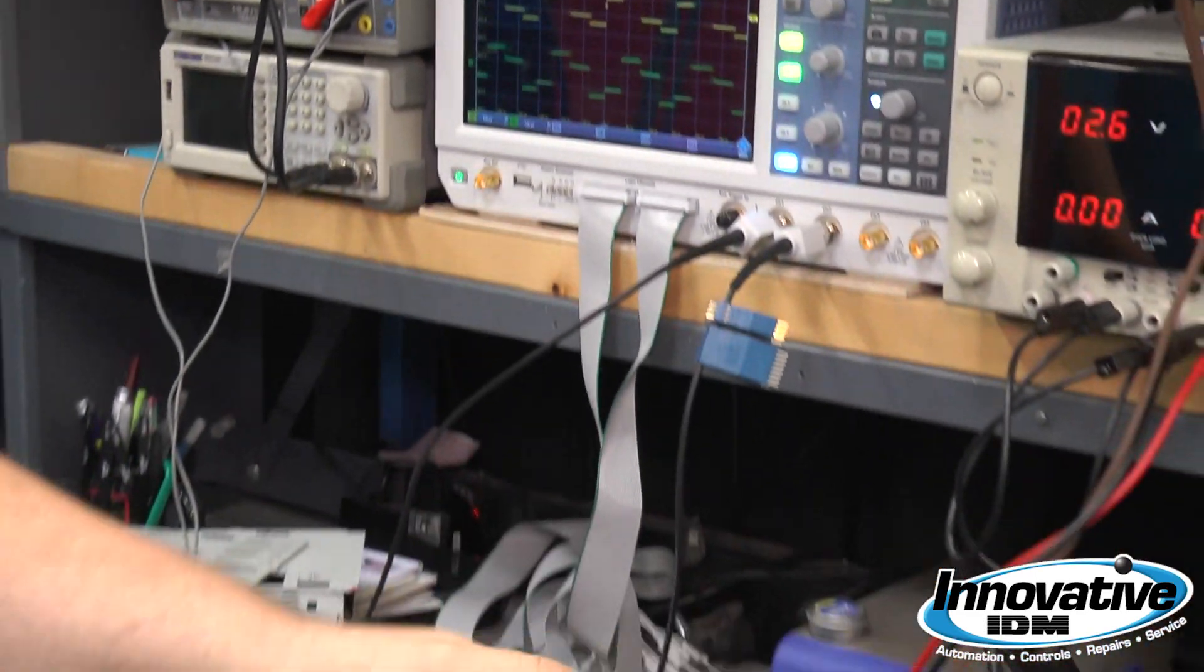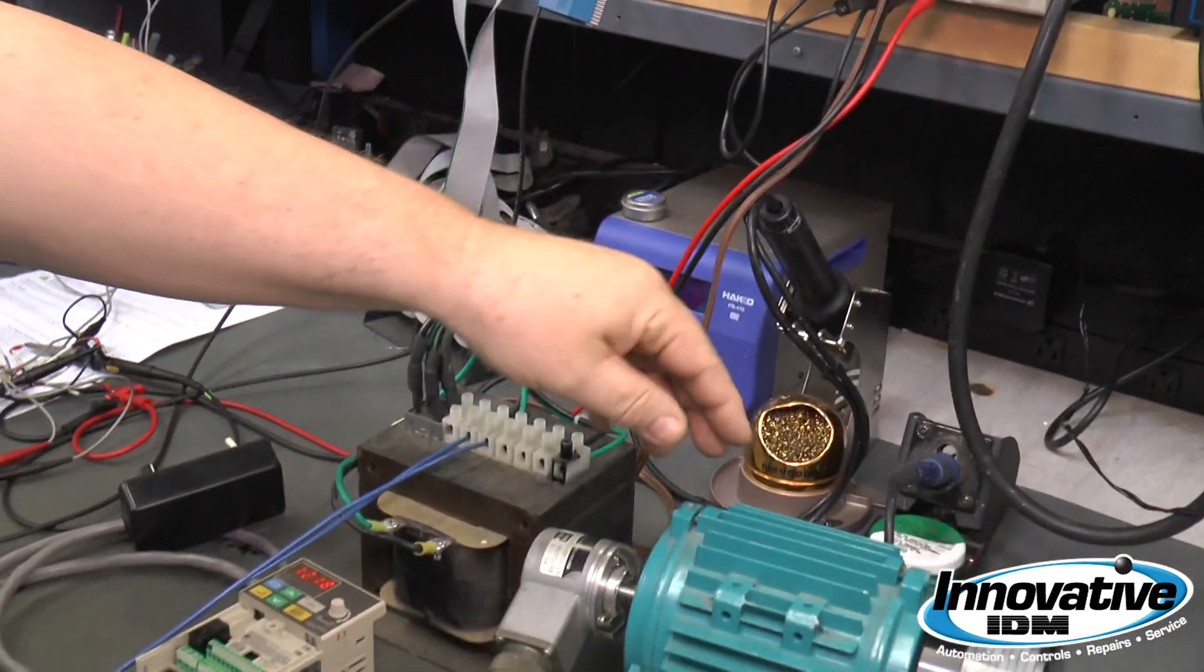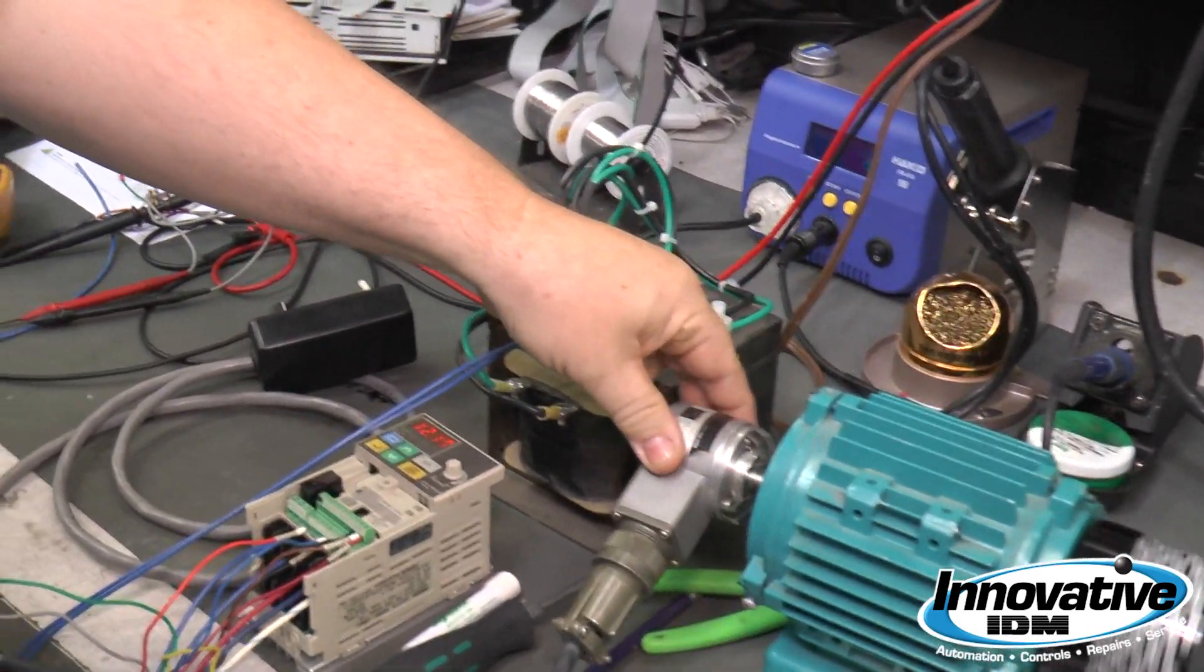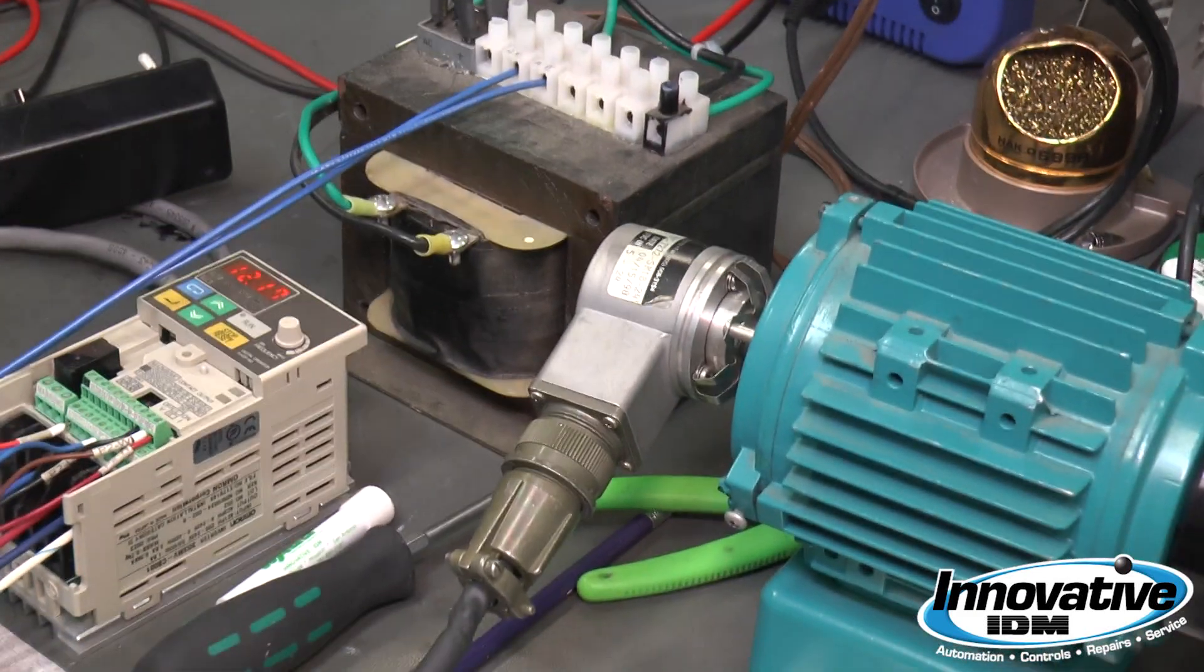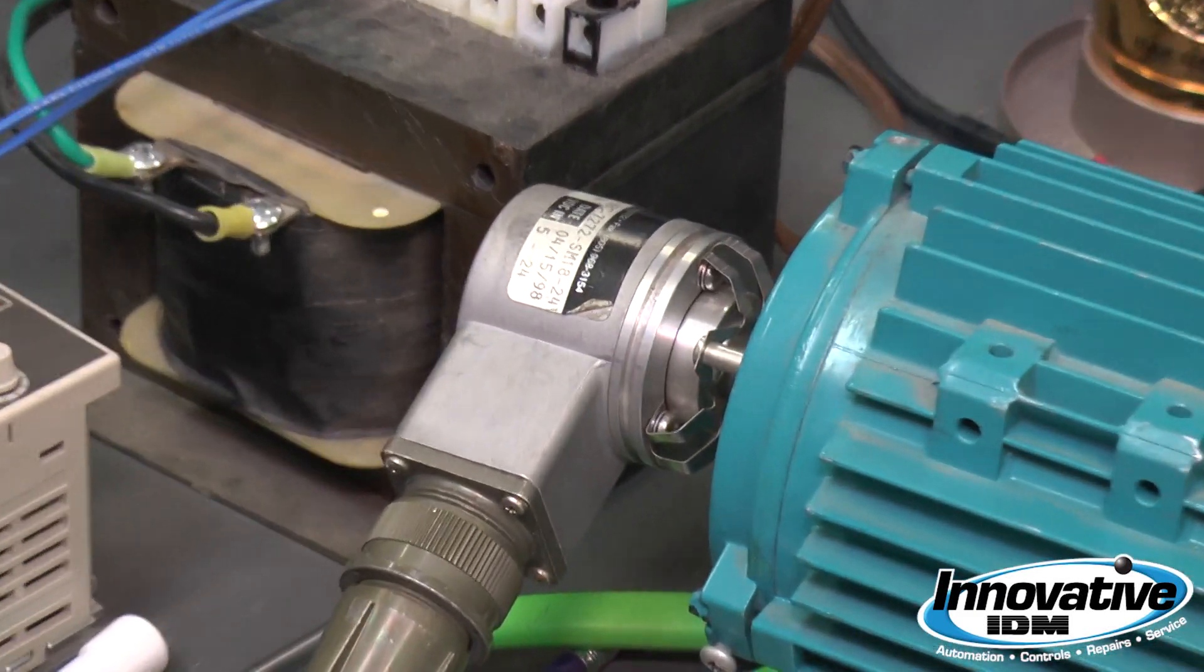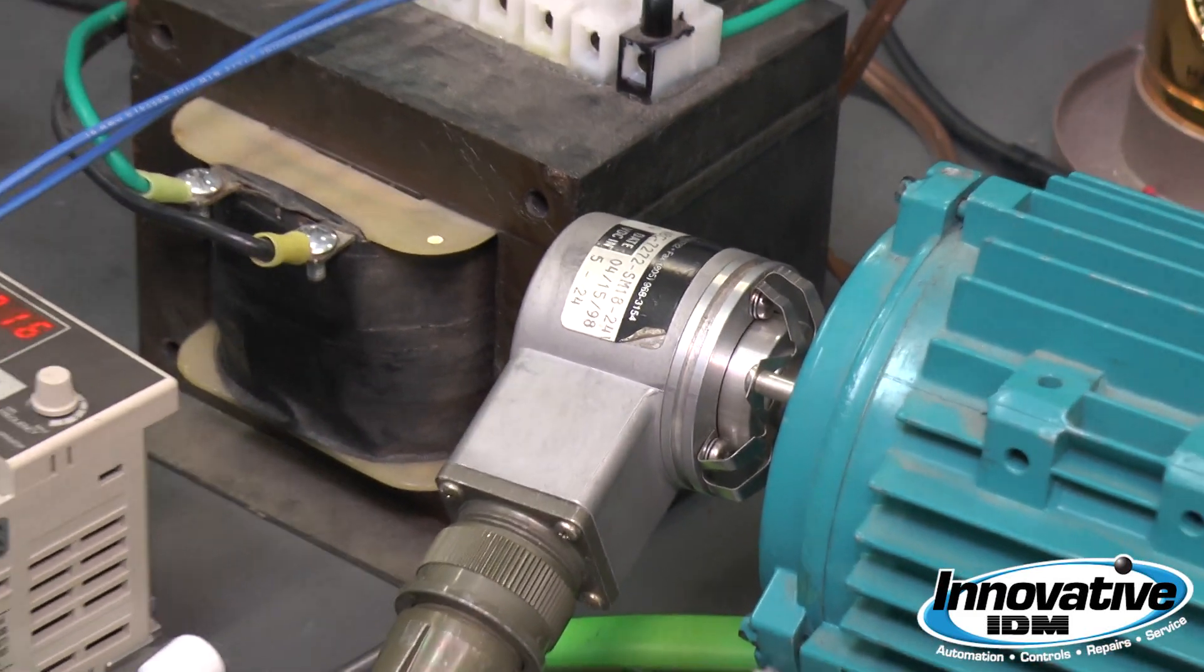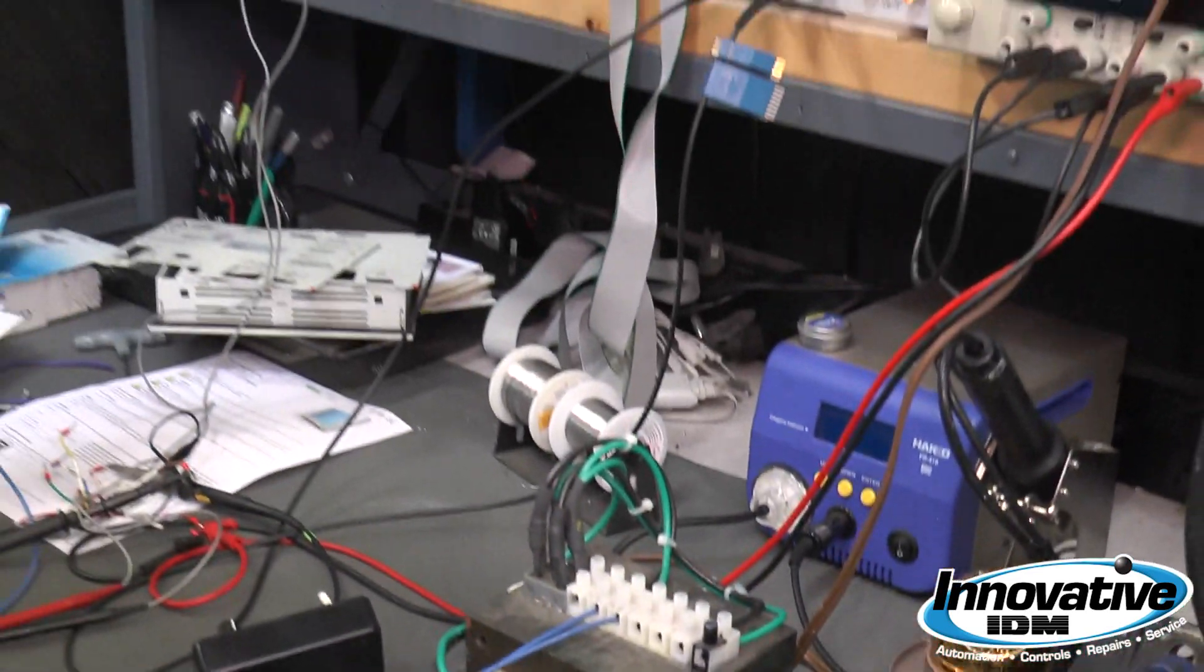If you look down here at the motor, one of the things I've noticed is that this encoder is not well attached. It vibrates, and as it vibrates it puts a physical harmonic into the signal, so it actually distorts it.